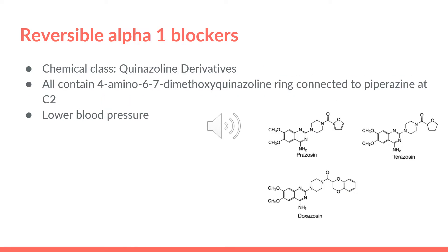For the reversible alpha-1 blockers, we have three drugs: prazosin, terazosin, and doxazosin. Their chemical class is quinazoline derivatives. They all contain a 4-amino-6,7-dimethoxyquinazoline ring connected to a piperazine at C2. They all lower blood pressure because they are alpha-1 blockers. An alpha-1 agonist causes vasoconstriction, but when we block this receptor, we decrease blood pressure because we are blocking the post-synaptic alpha-1 receptors in the blood vessels. So norepinephrine won't be able to bind anymore, which would decrease blood pressure.